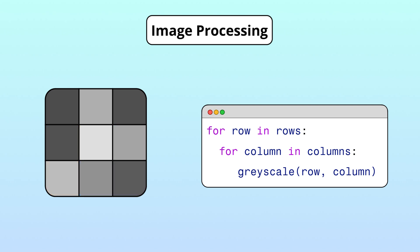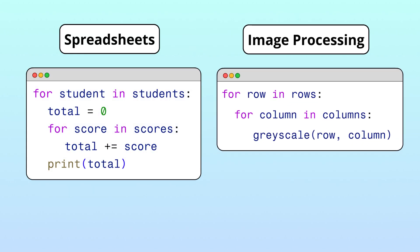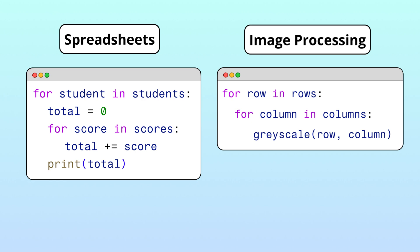If you're curious about how this works, we've left a link to some example code in the description. But be careful! These types of repeated operations quickly add up, which can make nested loops slow to run.